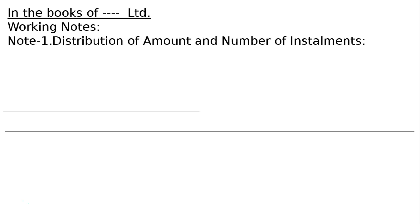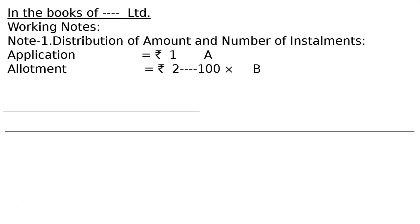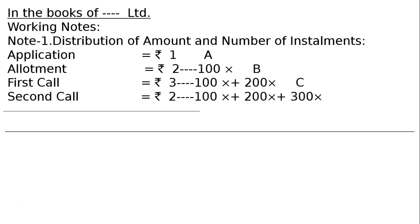Note 1 – Distribution of amount and number of instruments. Application Rs.1, Allotment Rs.2. Shareholder A holding 100 shares failed to pay allotment — he paid only Rs.1. First call Rs.3; B paid only application and allotment, meaning he could not pay the first call. Second call Rs.2. C paid application, allotment, and first call — Rs.6 per share — but could not pay the second call.